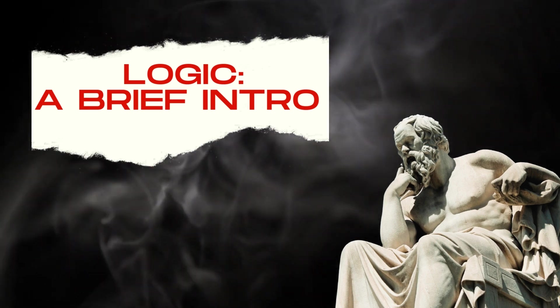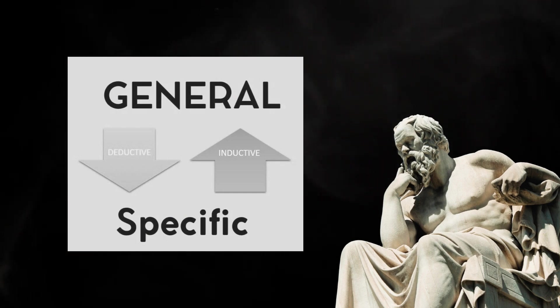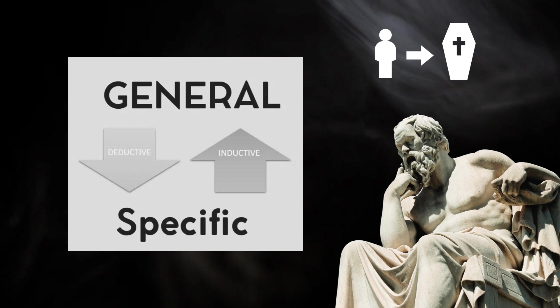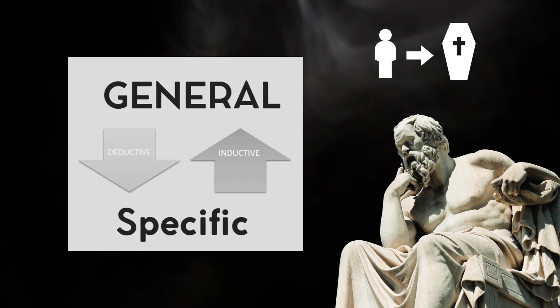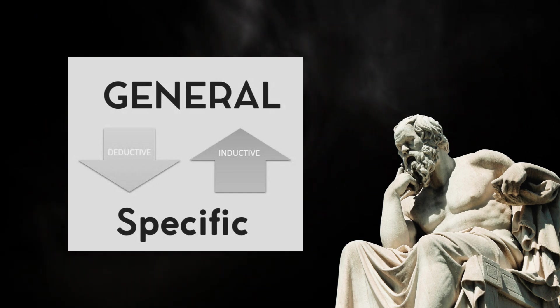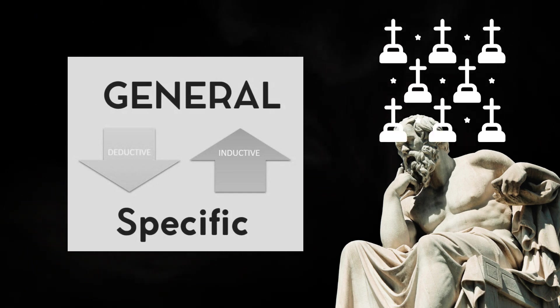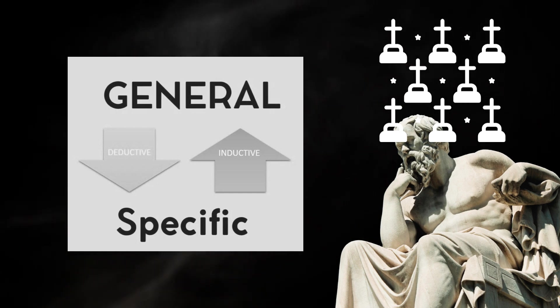There are two basic kinds of reasoning: deductive and inductive. Deductive reasoning typically moves from a more universal premise, for example all men are mortal, to a more particular conclusion, for example I'm mortal. Inductive reasoning typically moves from particular premises, for example this guy is mortal and so is that guy and so is she and so on, to a more universal conclusion, for example all men are mortal.